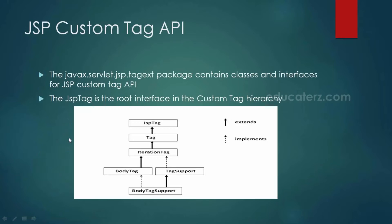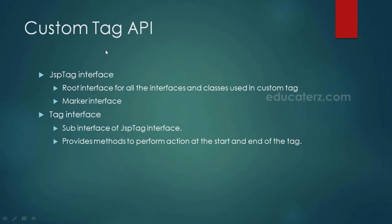When we have to create a custom tag, the first and foremost package to be imported is javax.servlet.jsp.tagext, which contains all the classes and interfaces for creating custom tags. JSPTag is the root interface in the custom tag hierarchy and it is also a marker interface — that is, it has no methods inside it.